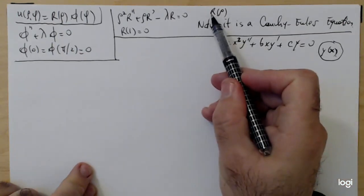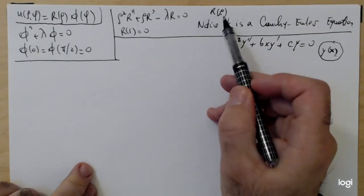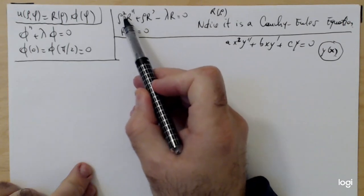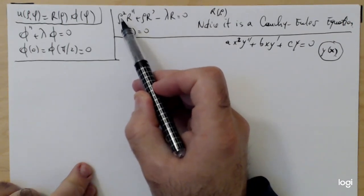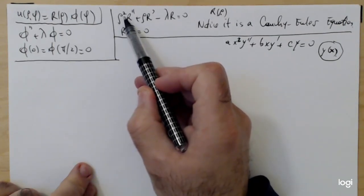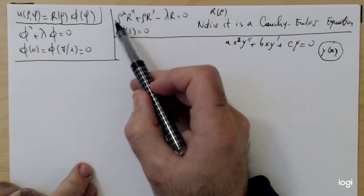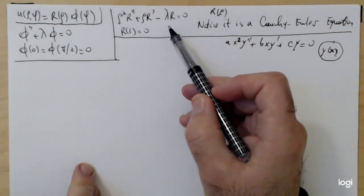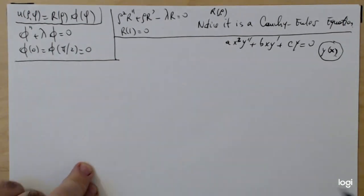Here we have R as a dependent variable and rho as the variable. So instead of y you have R, instead of x you have rho. Pay attention to the relationship between the coefficient of rho, the exponent of rho, and the order of the derivative — they are in agreement. So rho squared R double prime, rho R prime, and then R by itself with some coefficient. So it is a Cauchy-Euler type.